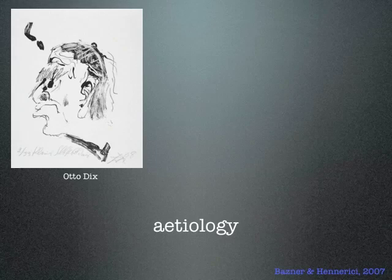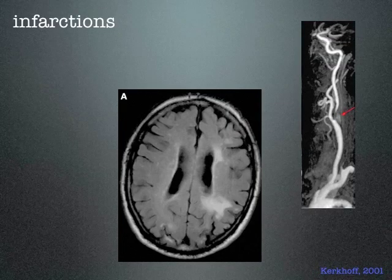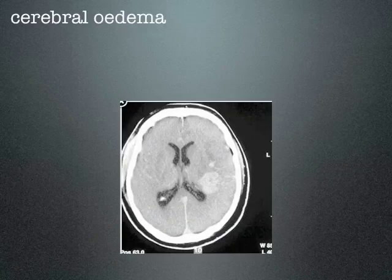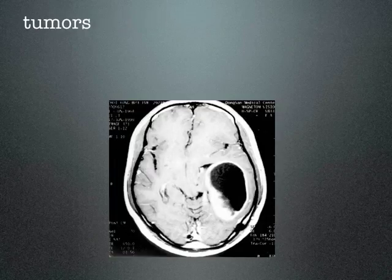So how do these disorders come about? From a neuropsychological perspective, they arise from infarctions, hemorrhagic stroke, cerebral edema, or in the case of our patient Janet, a tumor.